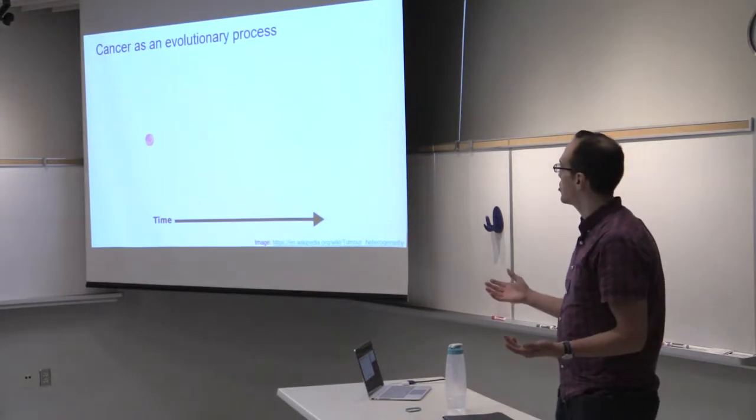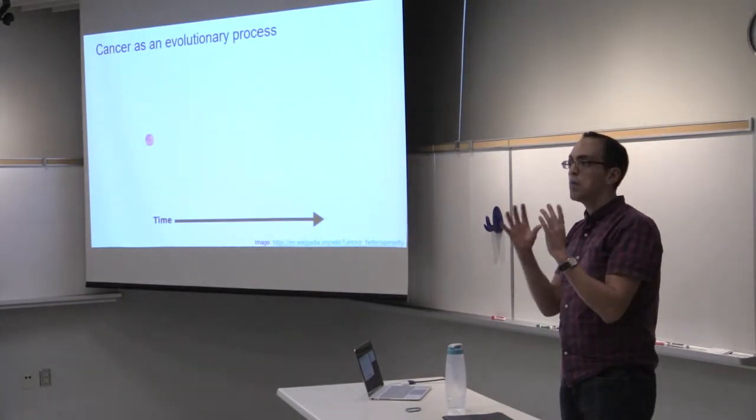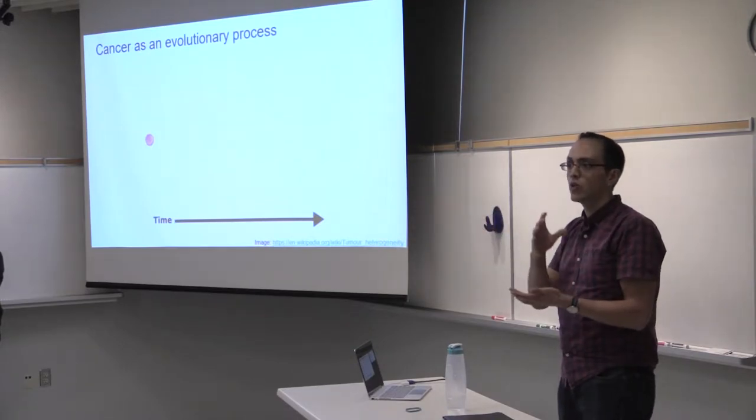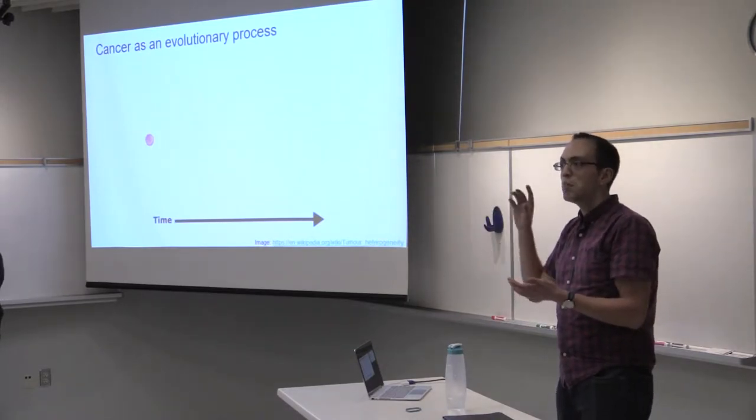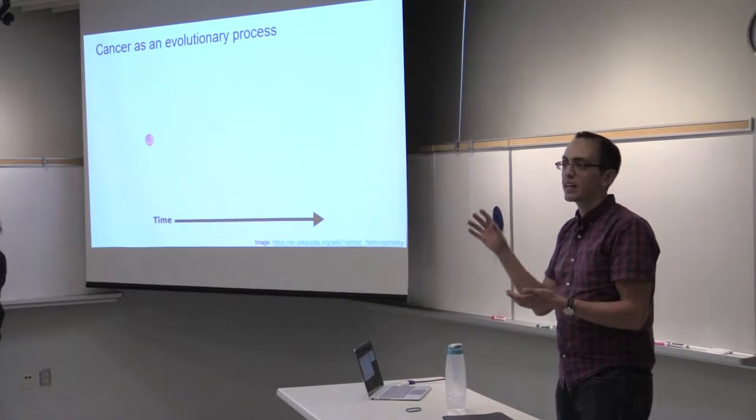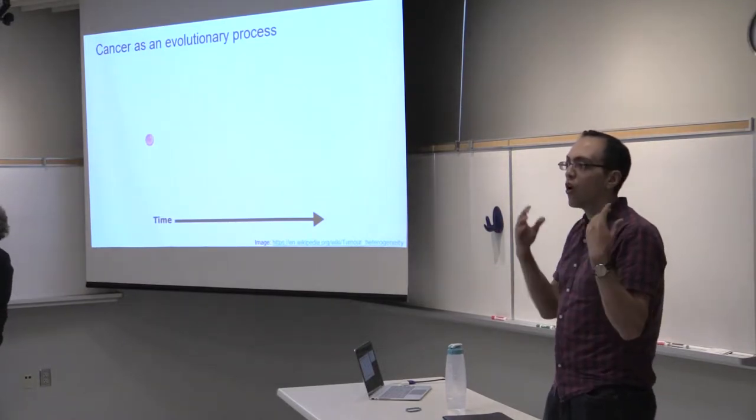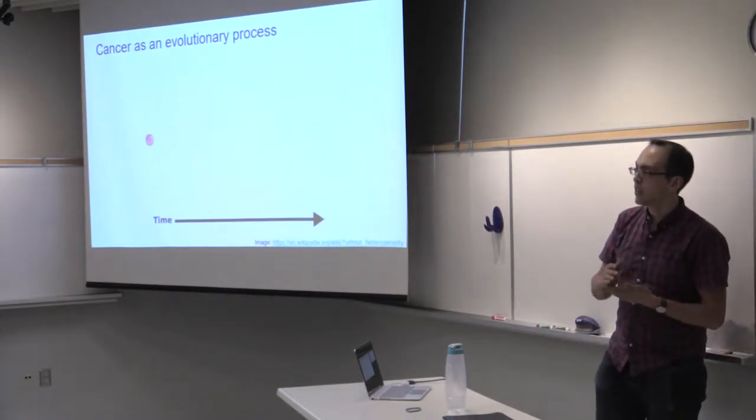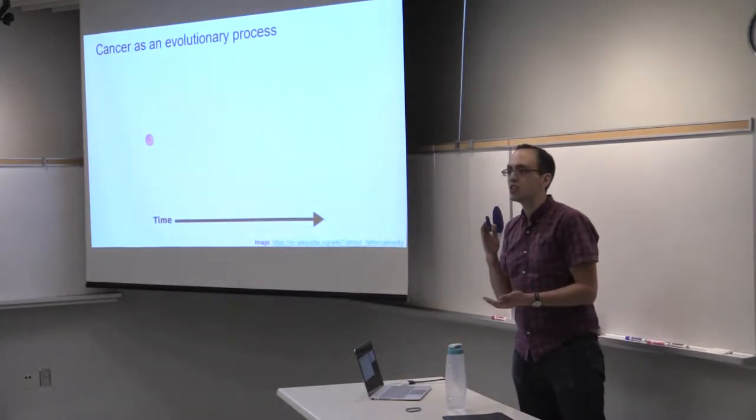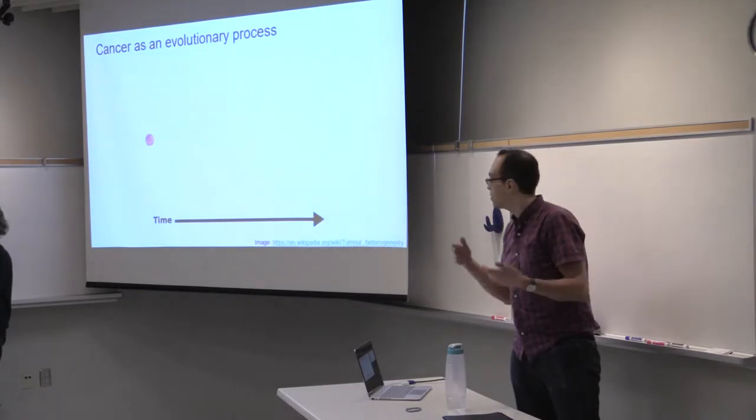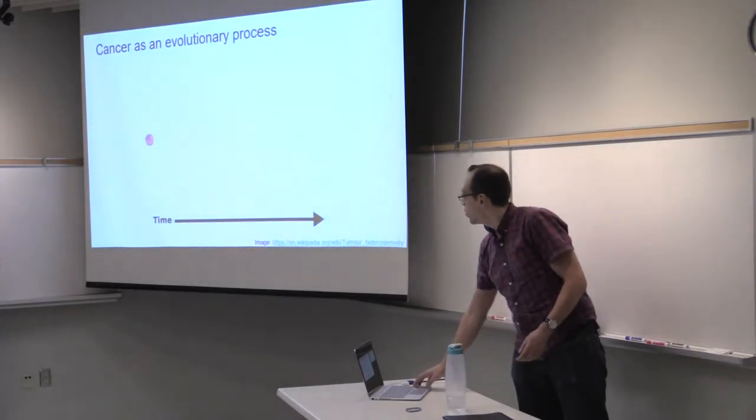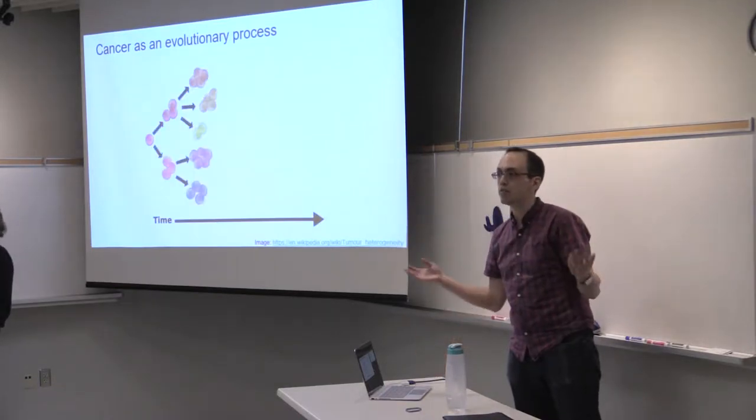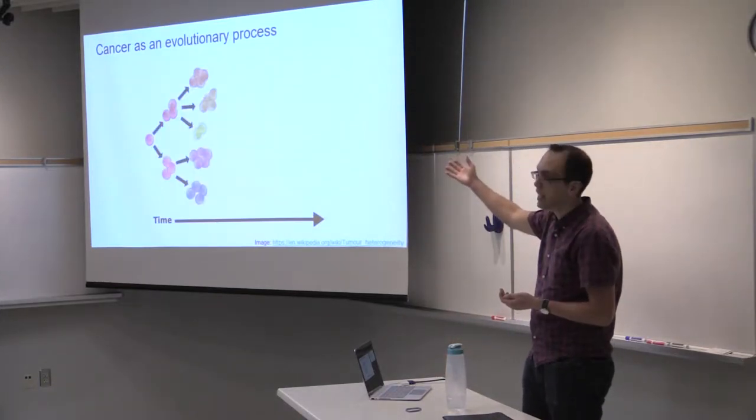We think about cancer as an evolutionary process. If we look at a single patient's tumor, we have these heterogeneous populations of cells, each with its own characteristic set of mutations, but we can trace their development back, in theory, to a single cell that acquired all of the necessary mutations to become cancerous. Of course, evolution doesn't stop with tumorigenesis. We can imagine that you have this initial clonal cancer population that gives rise to any number of different subclonal populations you see here.